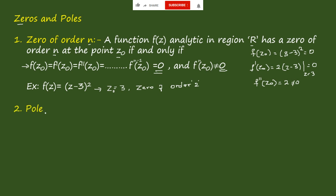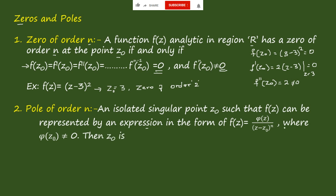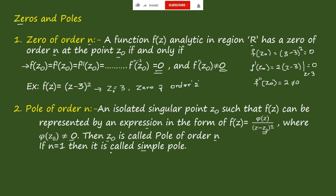Now, poles of order n: an isolated singular point z₀ is a pole of order n if the function f(z) can be represented in the form f(z) = φ(z) / (z − z₀)^n, where φ(z₀) ≠ 0. In the denominator we see the form (z − z₀)^n, so z₀ is the pole and n is the order. If n = 1, it becomes a simple pole.